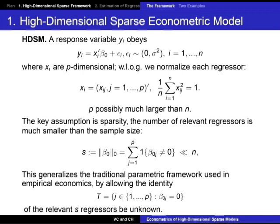What we're saying is: look at the coefficient beta naught and count the number of non-zero components in beta. This is denoted by the zero-norm of beta — it's actually a pseudonorm — and this is our s. The number of non-zero components in this vector beta naught is much smaller than the sample size, or the number of relevant regressors is also much smaller than the sample size.